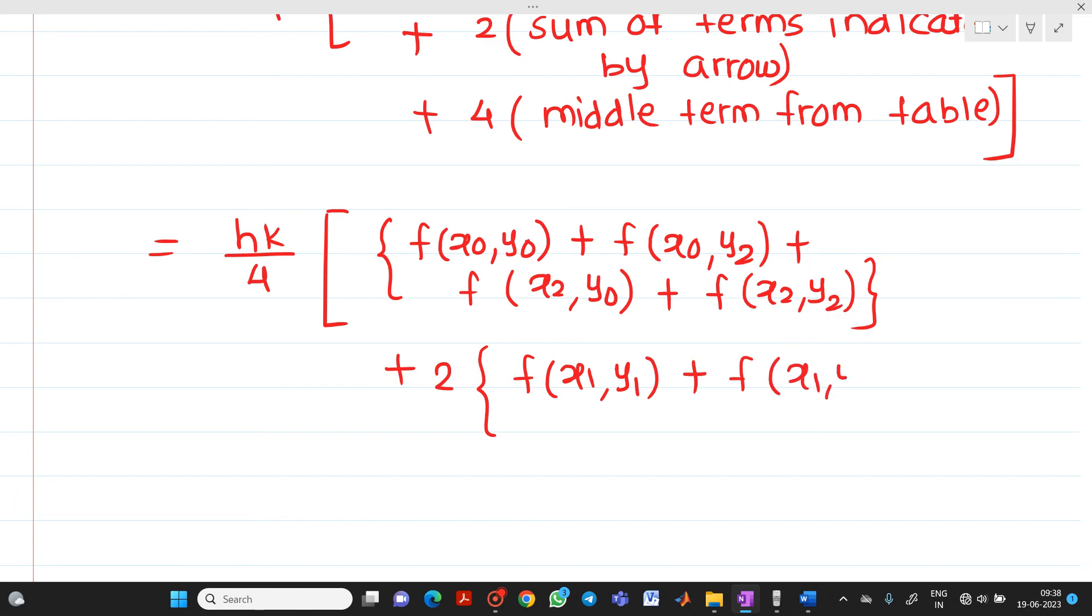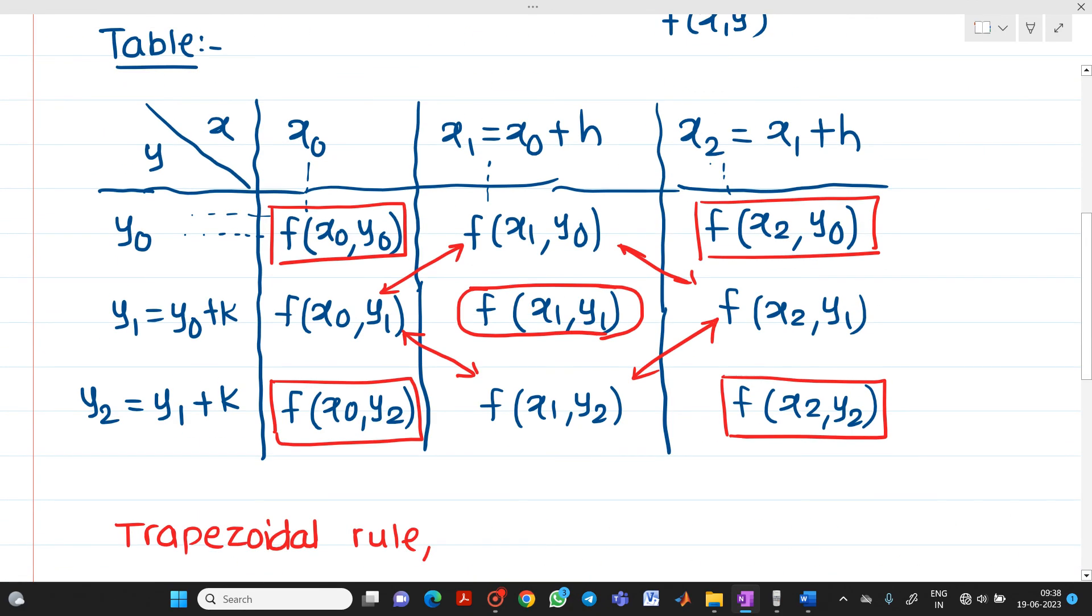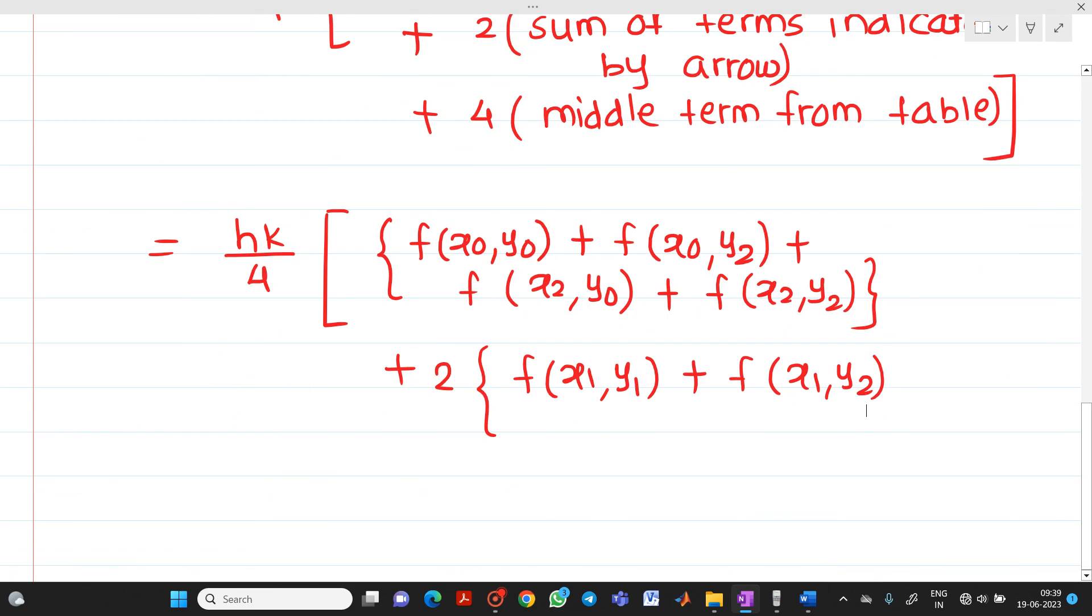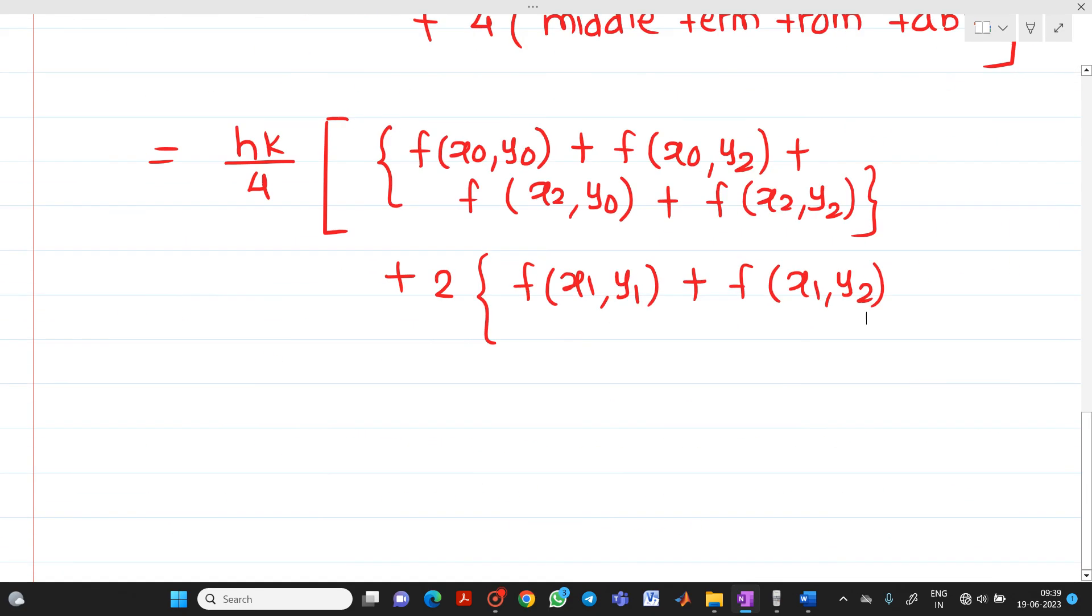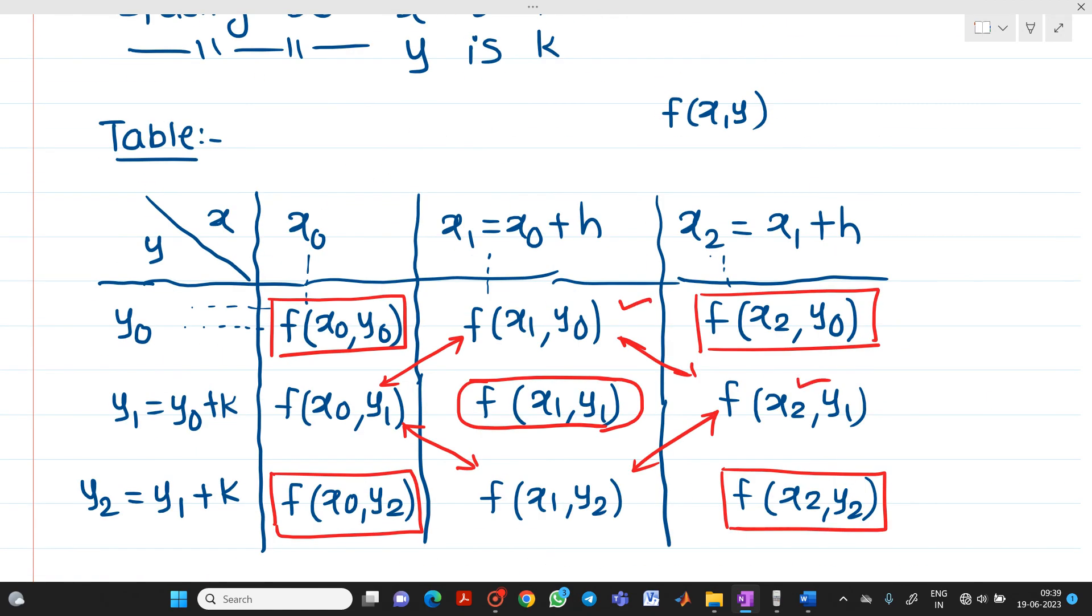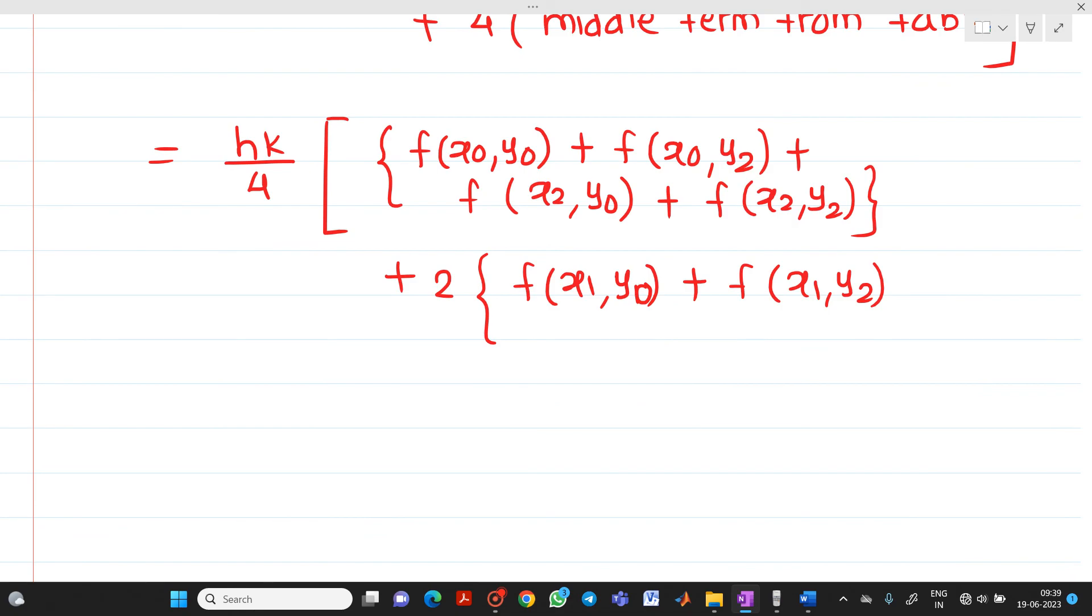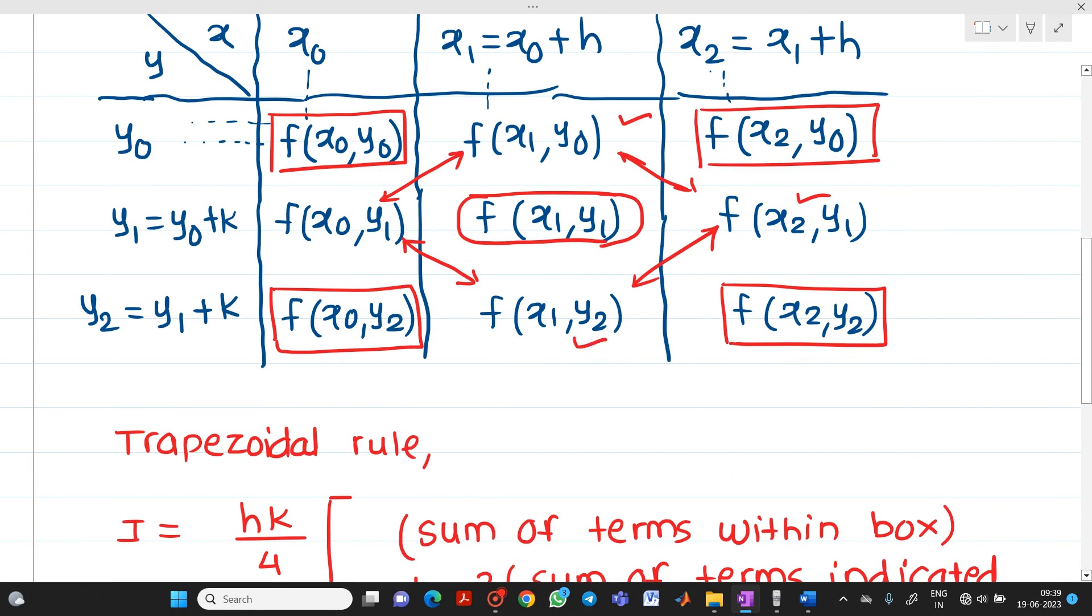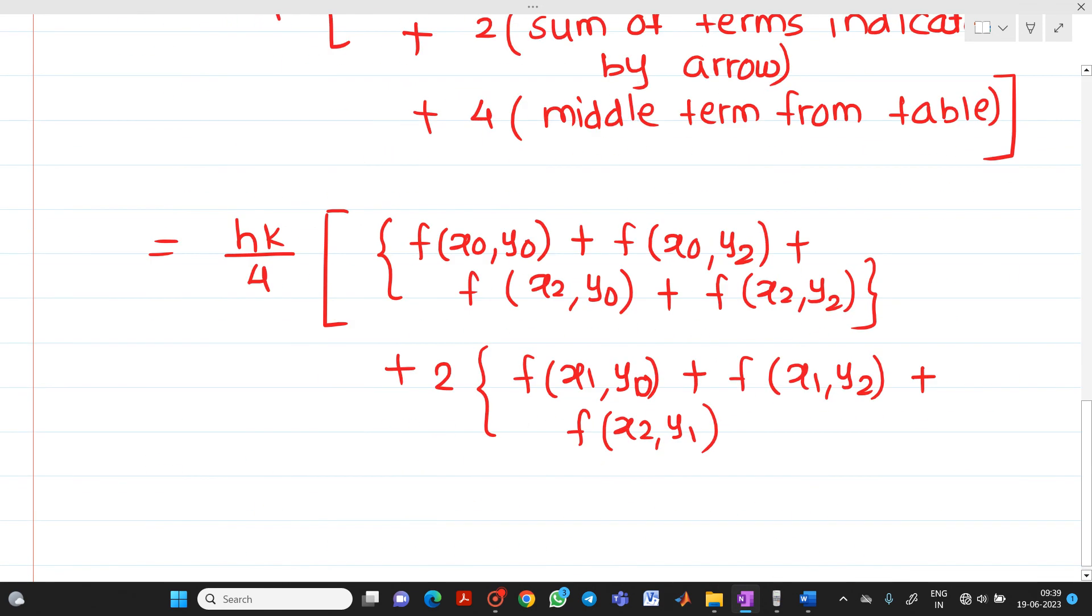Then x2 y1, then f of x1 y2 which is to be written here and next is f of x0 y1. So here plus f of x0 y1 plus 4 into middle term. What is the middle term here? It is f of x1 y1.